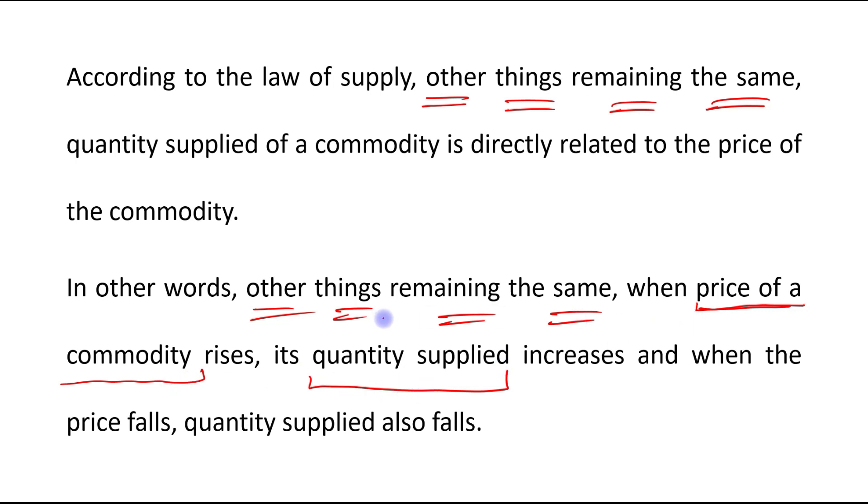And in order to isolate its effect, we are keeping other factors as constant. So whatever change comes in quantity supplied, that entire change comes because of this factor, because other factors are constant. That's why we have assumed them as constant. They have no impact on quantity supplied. And one thing to note is that when price increases, quantity supplied increases, and when price falls, quantity supplied also falls.